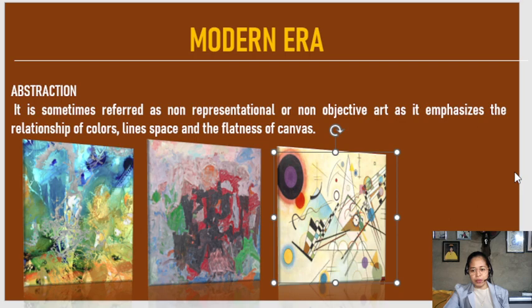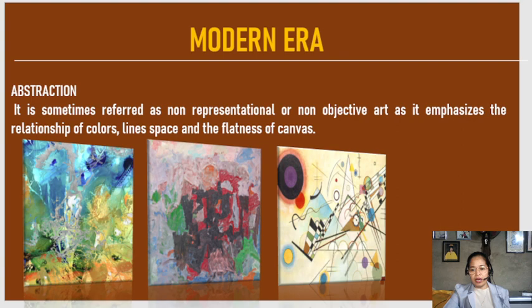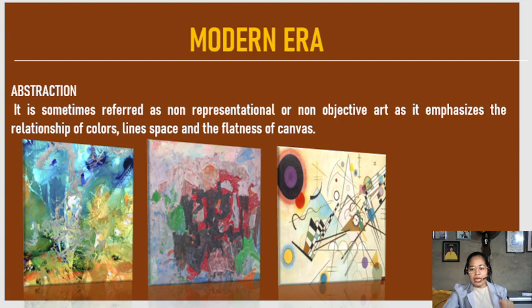Abstraction can be understood as non-representational. When we say non-representational, this refers to art that does not attempt to represent or reference reality. The art may simply depict shapes, colors, and lines, but may also express things that are not visible — for example, emotions or feelings. Those are considered non-representational art.